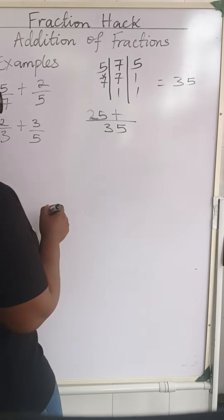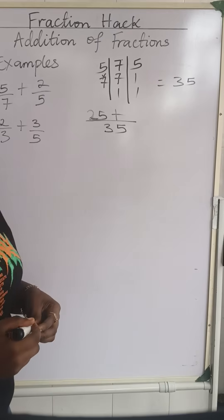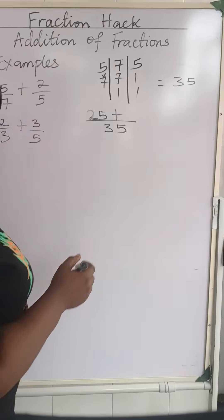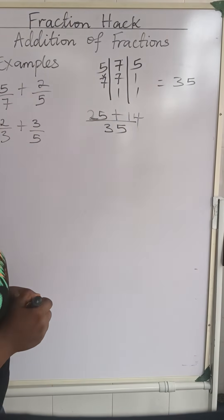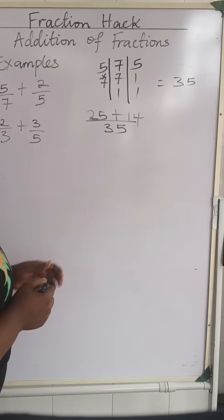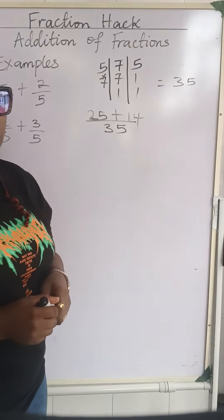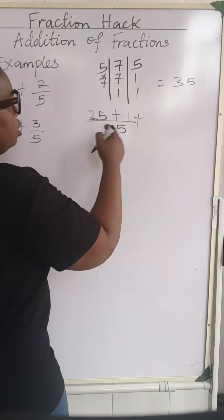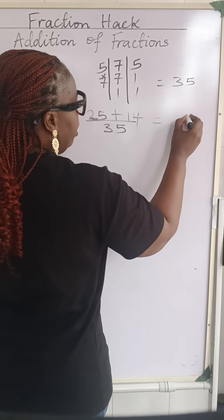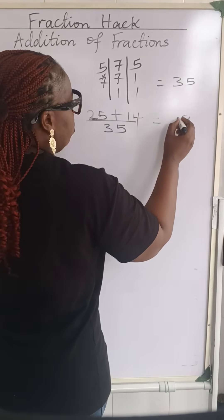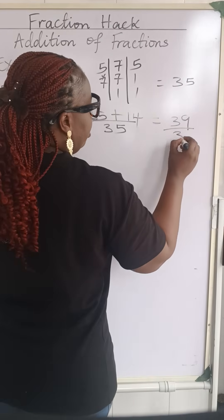Then you put your addition sign. 5 going into 35 is 7 times. 7 times 2 is 14. So we will add 25 plus 14, which gives us 39. 4 plus 5 is 9, and 2 plus 1 is 3, all over 35.